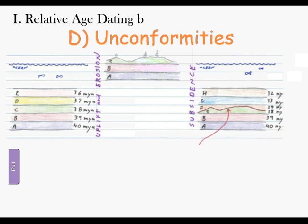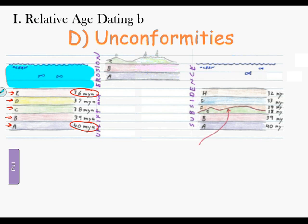Looking at the diagram, on the left-hand side we have rock layers A, B, C, D, and E. Rock layer A is the oldest — it was deposited 40 million years ago. Rock layer E was deposited 36 million years ago — that's younger, more recent. Up above, we have the ocean, and those rock layers have been deposited in the ocean over a number of millions of years.